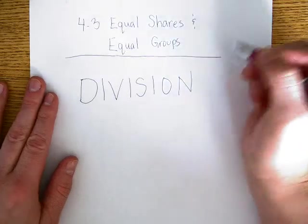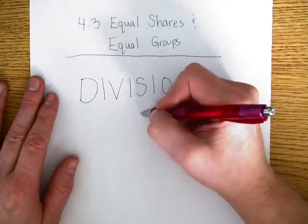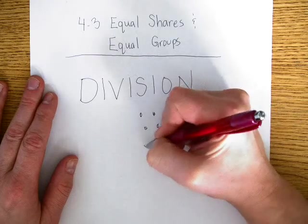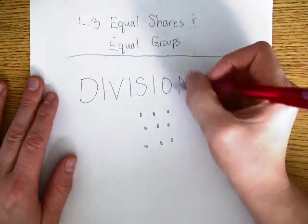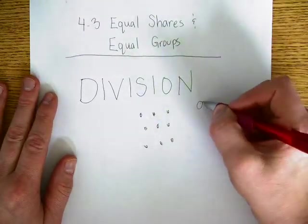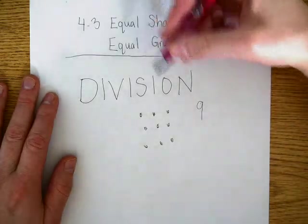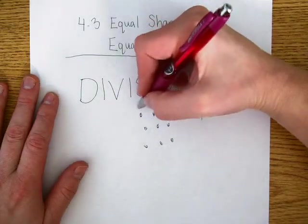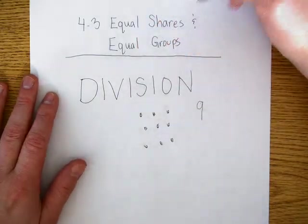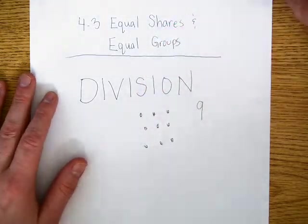Division means when we have a group of things, let's just say we have this group of dots, and we have 9 dots, and we want to break this group into equal parts, or equal shares, or this one big group into equal groups.